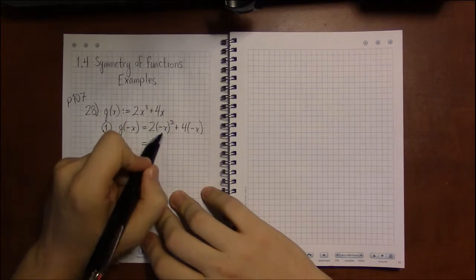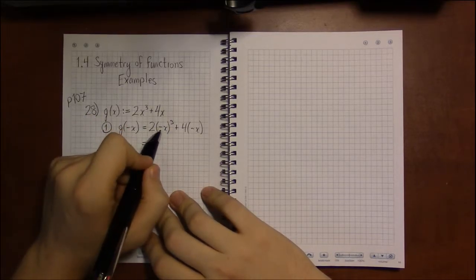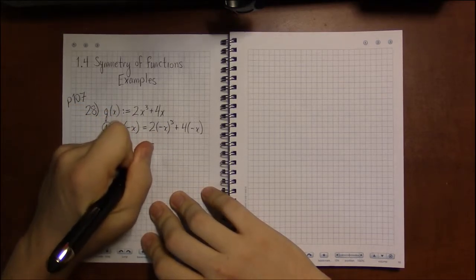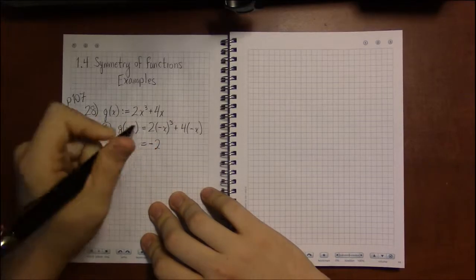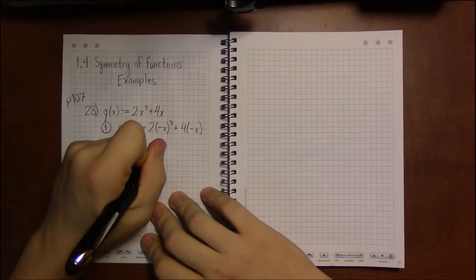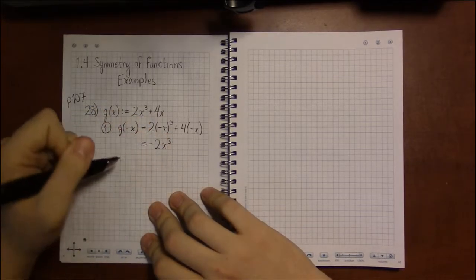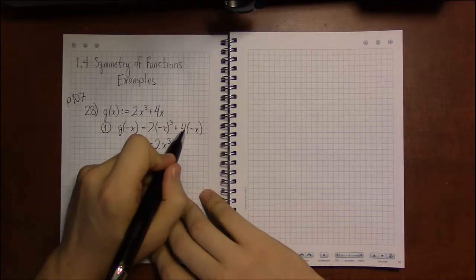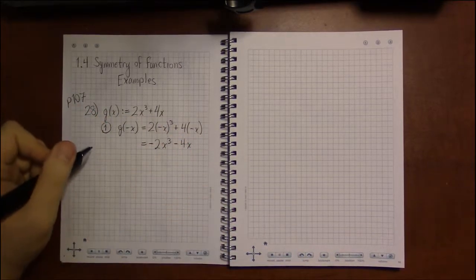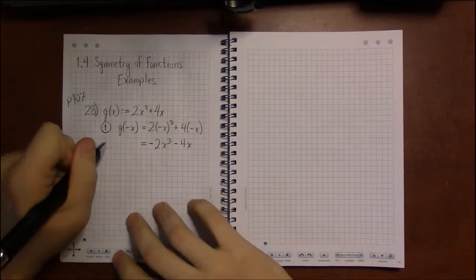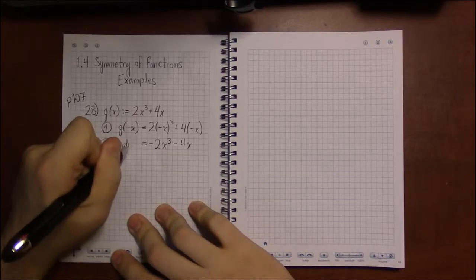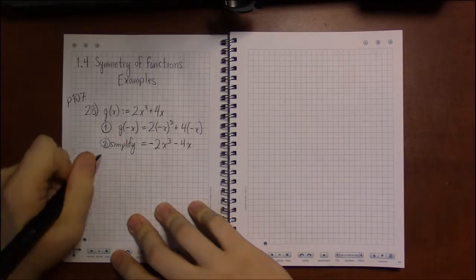Now, (minus x) cubed — that's minus x times minus x times minus x, which is three negatives. Three negatives multiplied together produce a negative, and three x's multiplied together give us x cubed. And 4 times minus x is minus 4x. So we simplify and take a look.